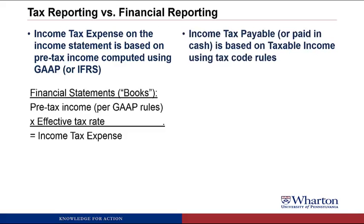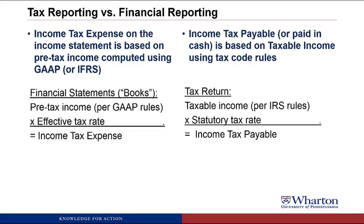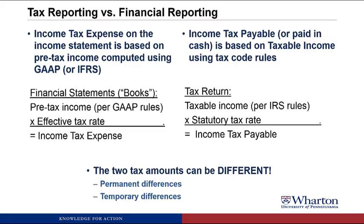Then in another set of books, you calculate income tax payable — the tax that you pay in cash — based on taxable income using the tax code rules in whatever country you are. In the US, the IRS is the tax authority. You take taxable income times the statutory tax rate to get income tax payable, which is what you actually owe the government. These two can be different, and the differences can be due to what are called permanent differences or temporary differences.